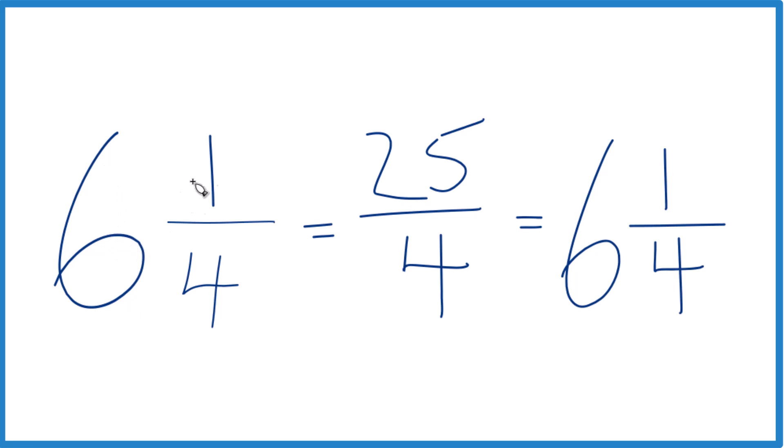Understand, too, that 6 and 1/4, it's equal to 25/4ths. They have the same value. It's just that we're representing 25/4ths here. This is an improper fraction, because the numerator here is larger than the denominator.